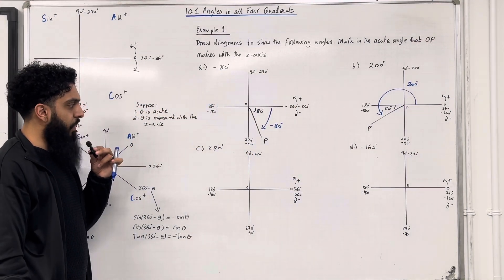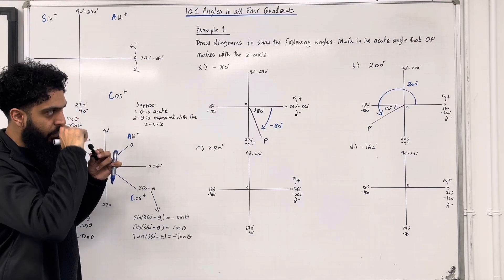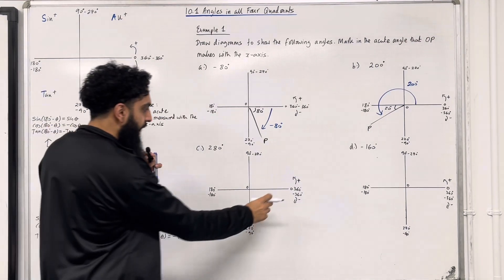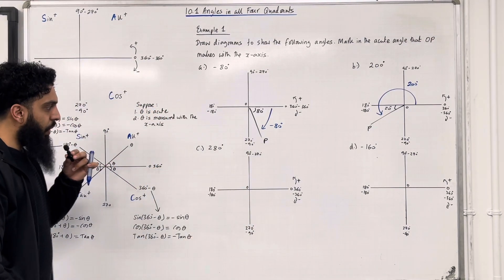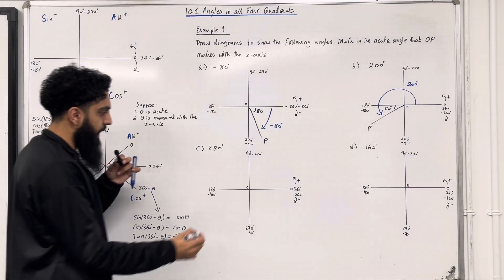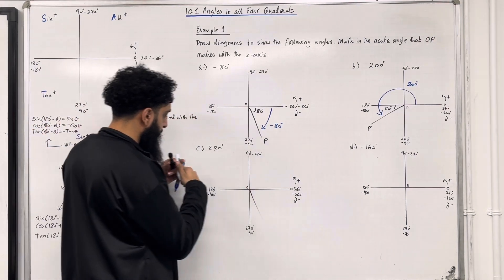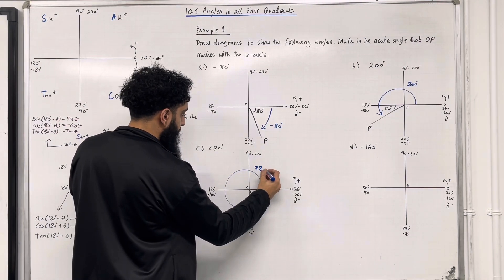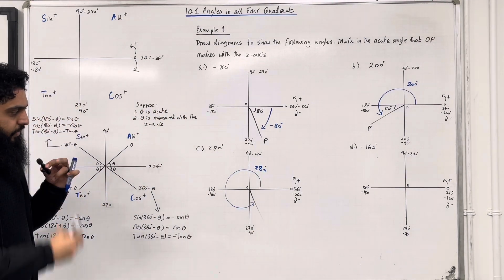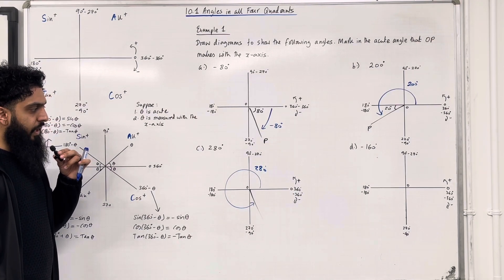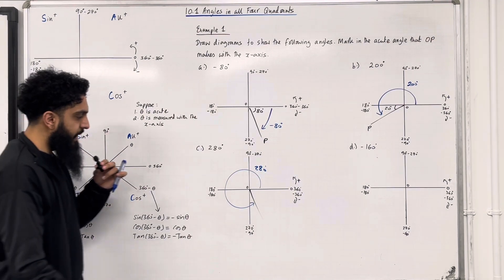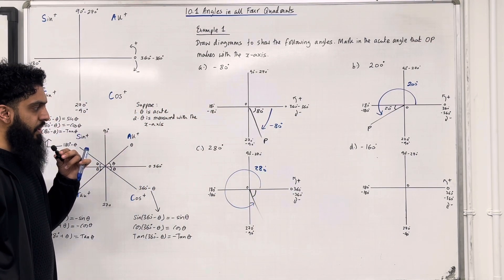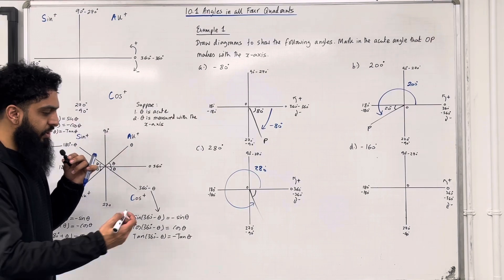Part C: 280 degrees. We measure the angle from the positive x-axis going anti-clockwise. 280 degrees looks something like this. The acute angle created with the x-axis: that acute angle is 360 take away 280, which is 80 degrees.